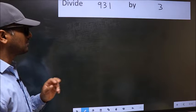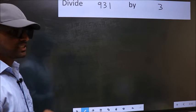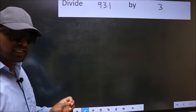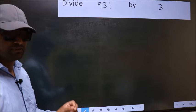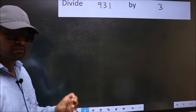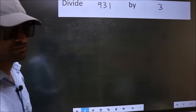Divide 931 by 3. While doing this division, many make a mistake. What is the mistake that they make? I will let you know. But before that, we should frame it in this way. Okay.